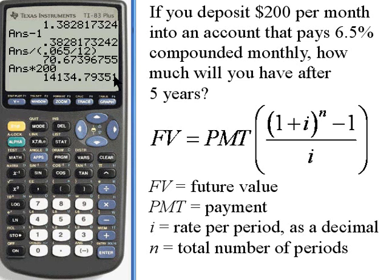What this means is, if you deposited $200 every month into an account that paid 6.5% compounded monthly, at the end of 5 years, you would have $14,134.79. Okay? Take care. I'll see you next time.